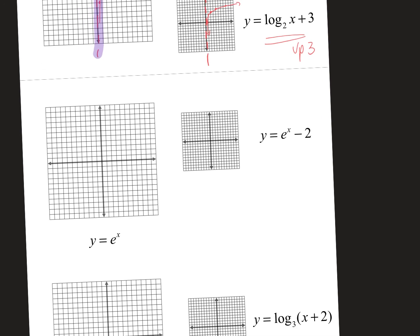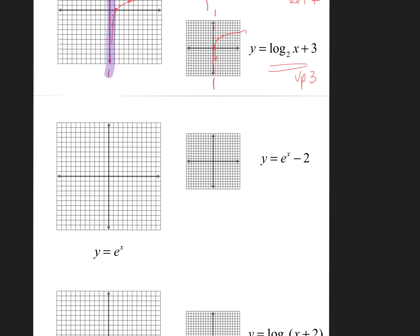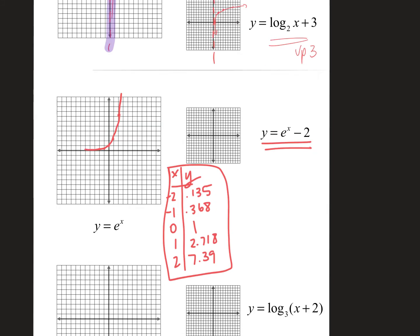So for y equals e to the x, this will require your calculator. You're going to make a little XY chart. Maybe plug in negative 2, negative 1, 0, 1, and 2 and figure out what these decimals are. So you should get dots like this. And again, here's my XY chart that I came up with with a calculator. And if I wanted to graph this, I would move it down 2 units.